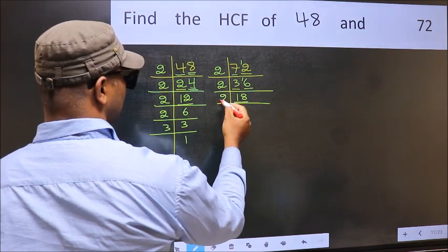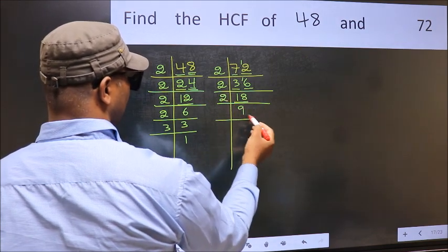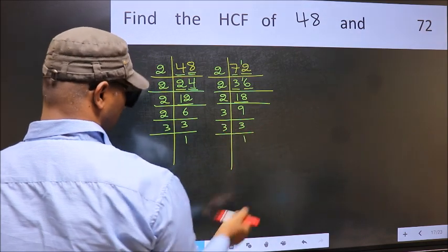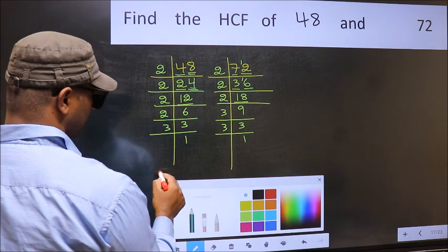Now 18 is 2 times 9 is 18. 9 is 3 times 3 is 9. Now 3 is a prime number, so 3 times 1 is 3.